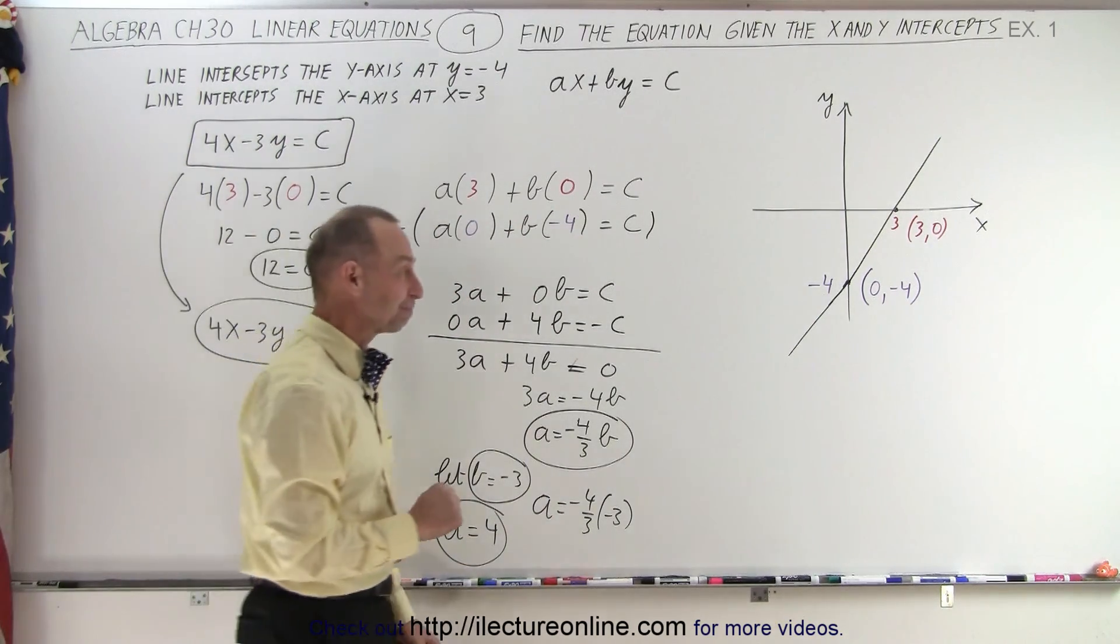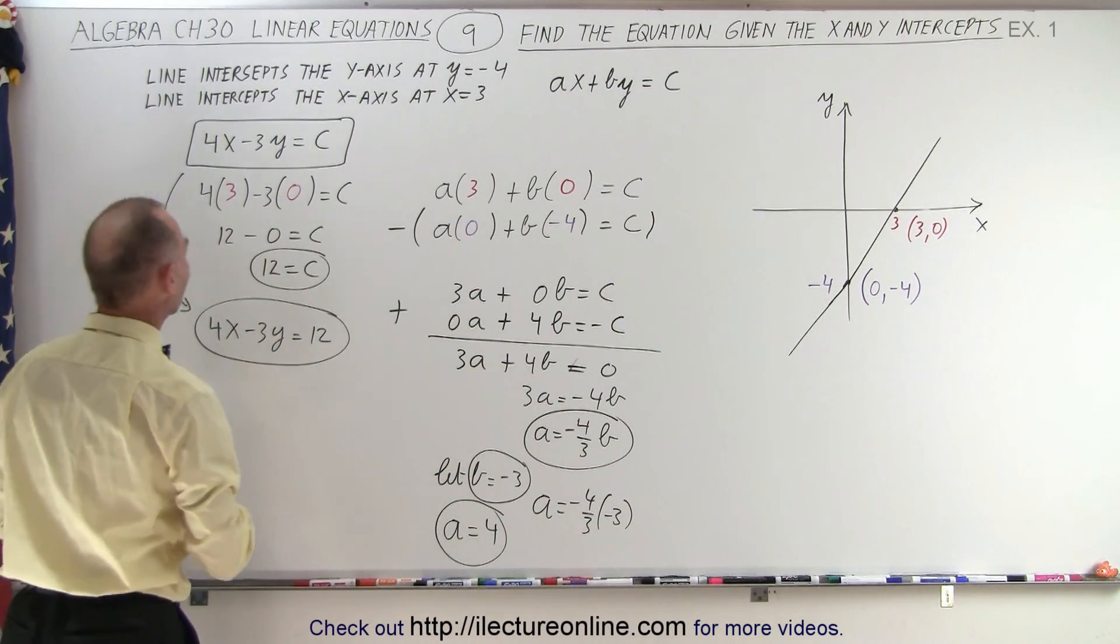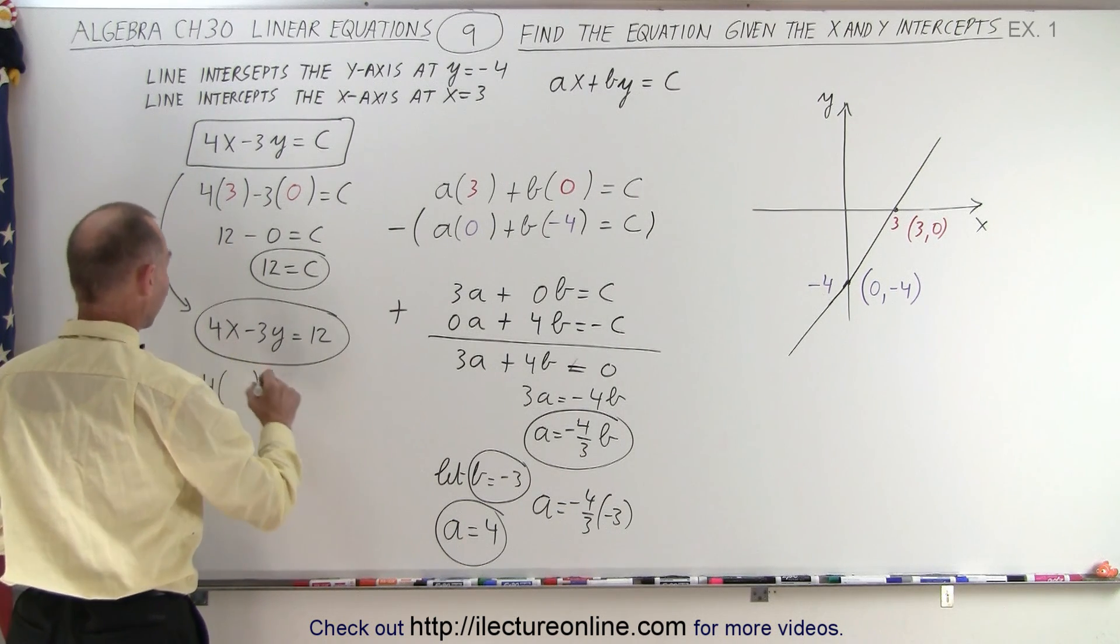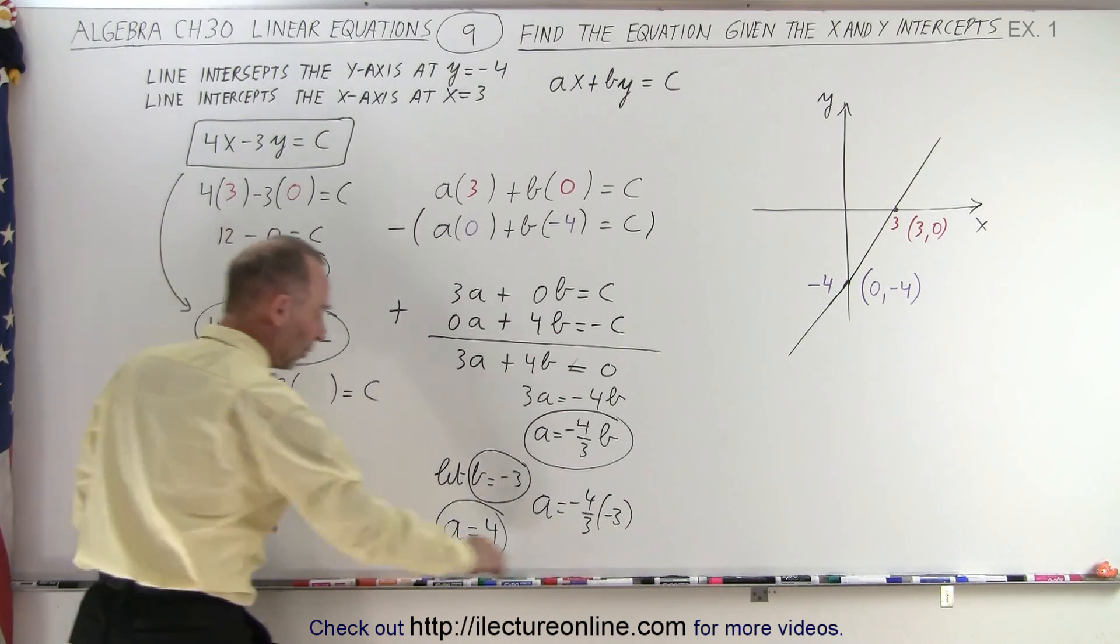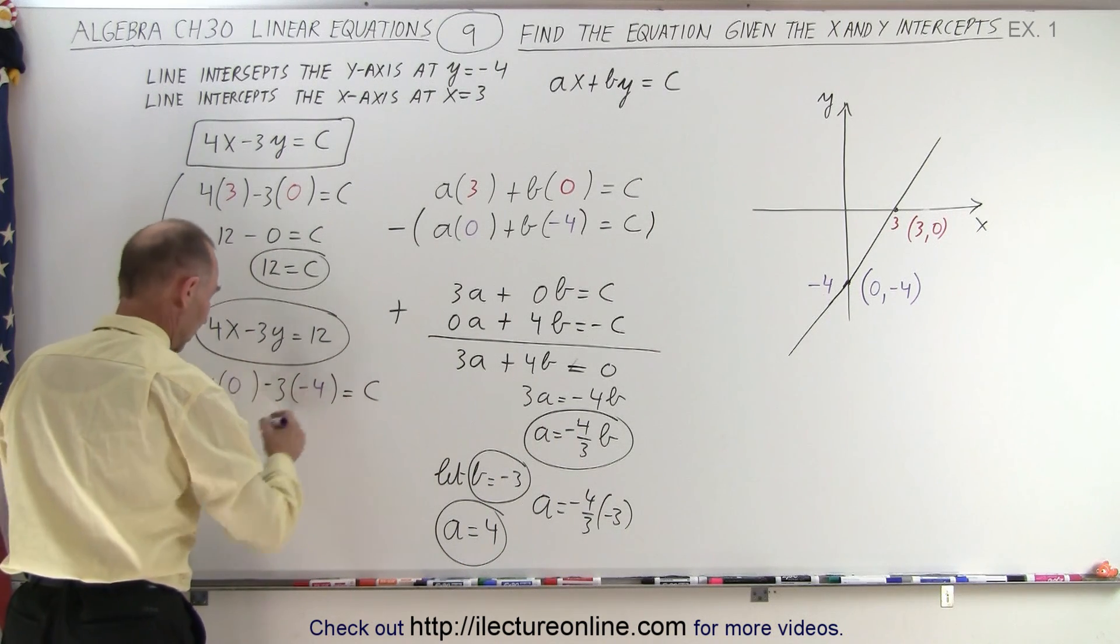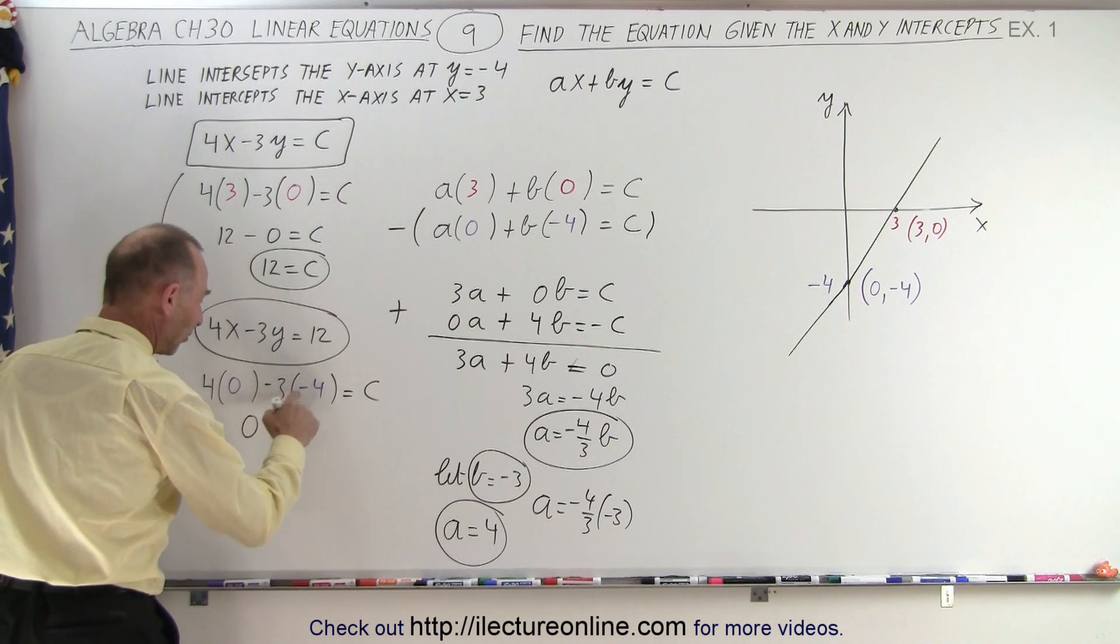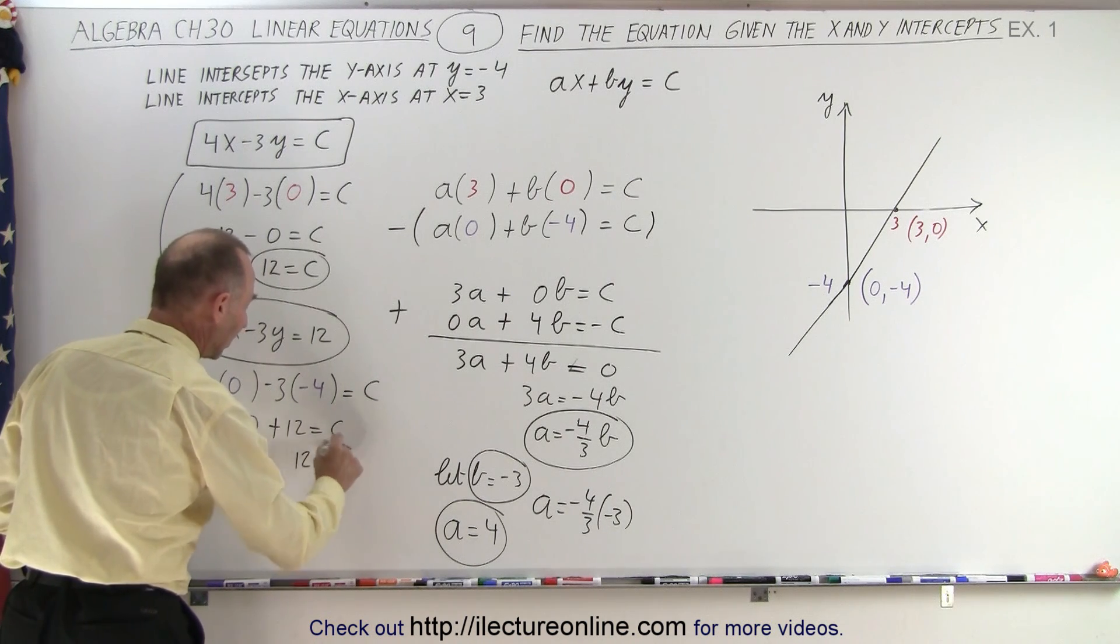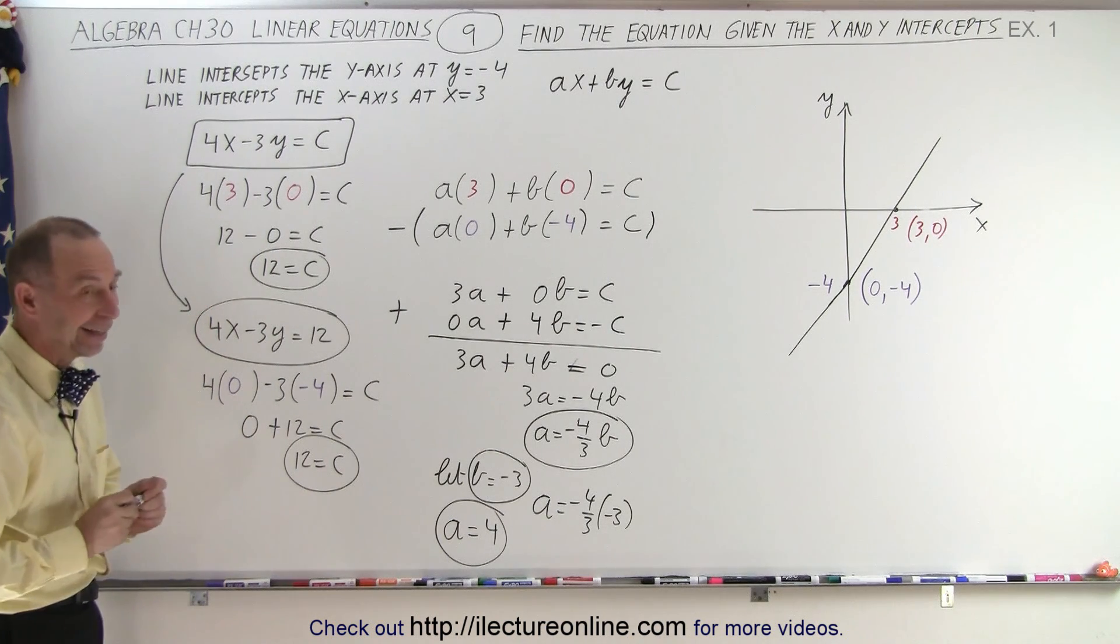And just in case you were wondering, we can also plug in the other point and get the same value for c. Let's try 4 times the value for x minus 3 times the value for y equals c. So, what happens when we plug in the other point? We get 0 and negative 4. Notice in this case, we end up with 0 minus 3 times minus 4 is plus 12 equals c or 12 equals c. So, you can see that either point would have gotten you the very same equation. And that is how it's done.